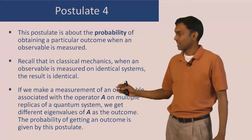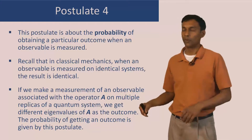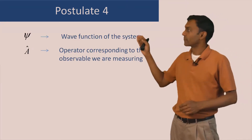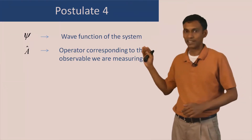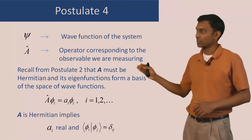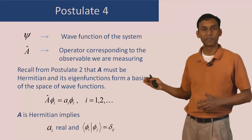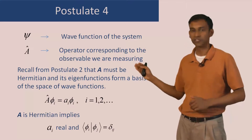Postulate 4 tells us what the probability is of getting a particular outcome when you make the measurement of the observable A. There are a few things we have to discuss before we go to the statement of the postulate. Suppose psi is the wave function of the system in question, the one which we are making the measurement on, and A hat is the operator corresponding to the observable that we are measuring. Recall from postulate 2 that this operator A must be Hermitian and its eigenfunctions should form a basis of the space of wave functions of the system.